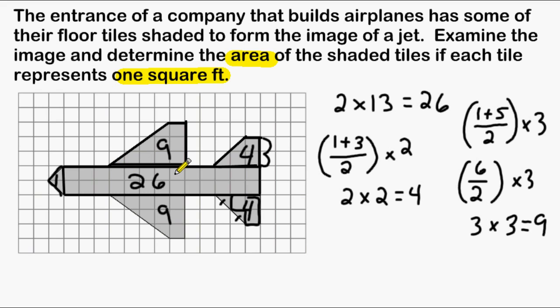So all we have to do now is add up all of these numbers, and that will give us what the area of the shaded tiles is. So we have 26, we have two 9's which is equal to 18, and if we add that together we get 44.